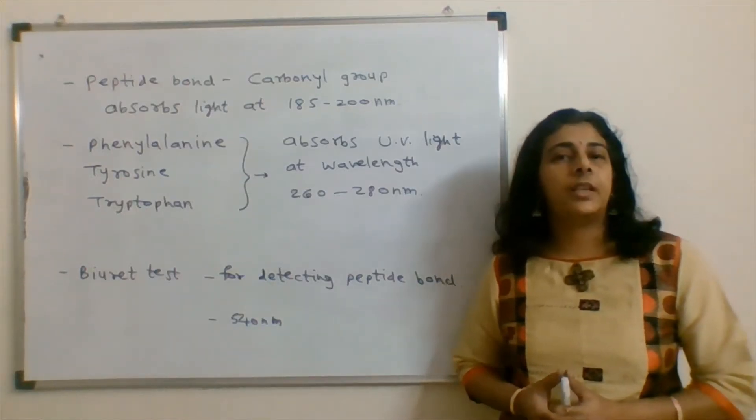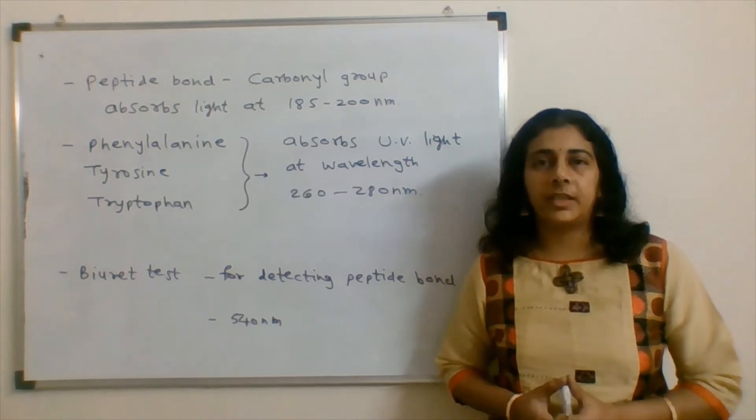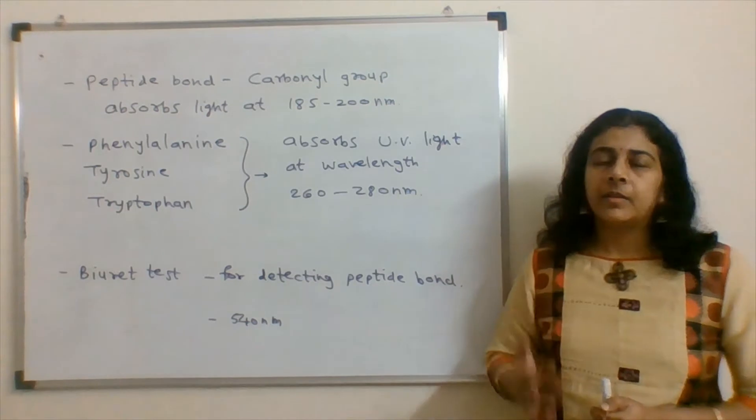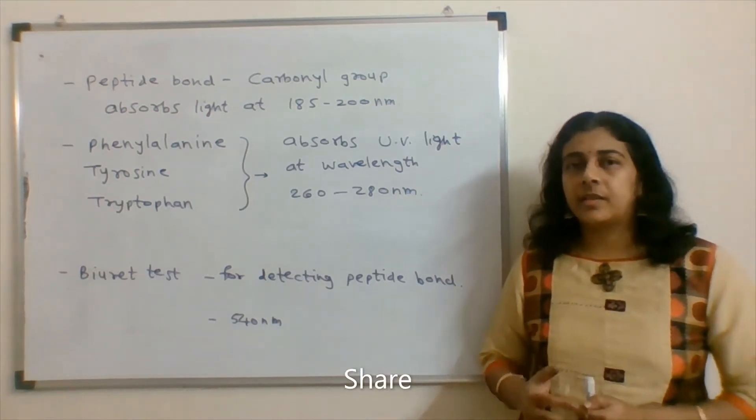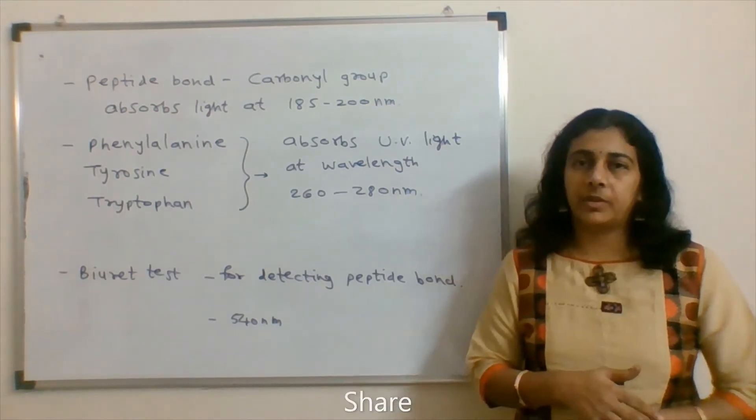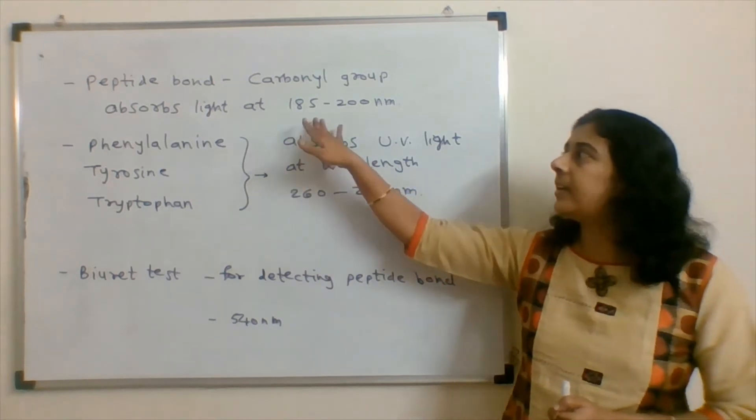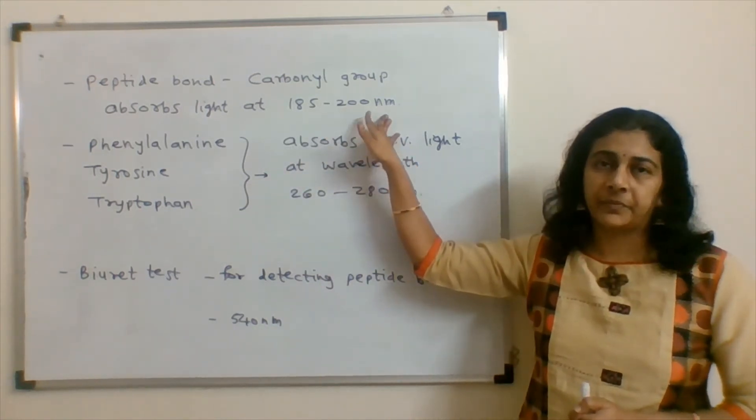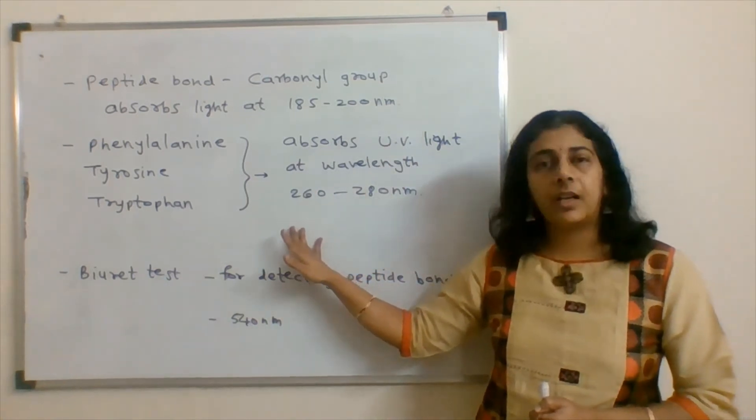So, if we think in reference to the wavelength absorption of peptide bond, we find three things. Peptide bond itself due to the presence of carbonyl group absorbs light at 185 to 200 nanometer.